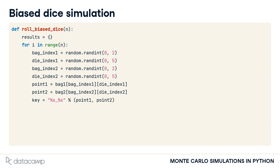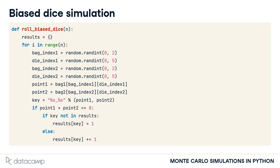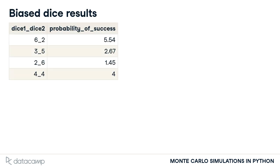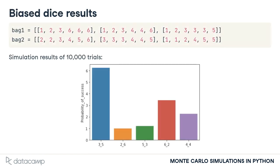Point 1 and point 2 are the points rolled from these two dice. We define a key variable that assigns a name to each combination of dice rolled. For example, if point 1 is 3 and point 2 is 6, the key will be 3_6. When points 1 and 2 add up to 8, we record the success in dice results, adding the key if it's not already present. Here's a look at the roll-biased dice results with 10,000 trials. The table shows all the combinations of die points that create a success, along with the probability that each combination of points will occur given our biased dice. It is easy to visualize the summary data and the likelihood of all possible outcomes for the two bags of biased dice we defined earlier.